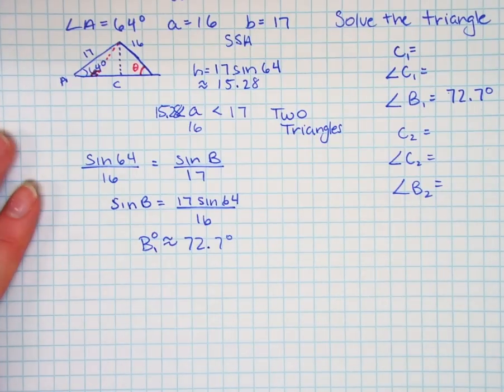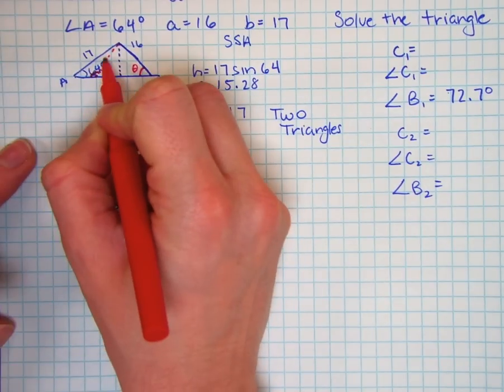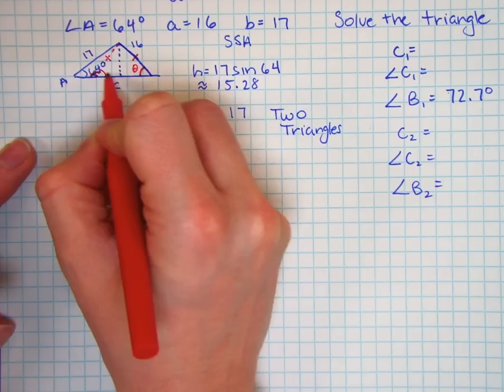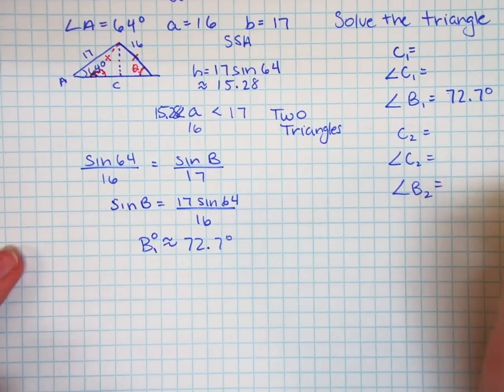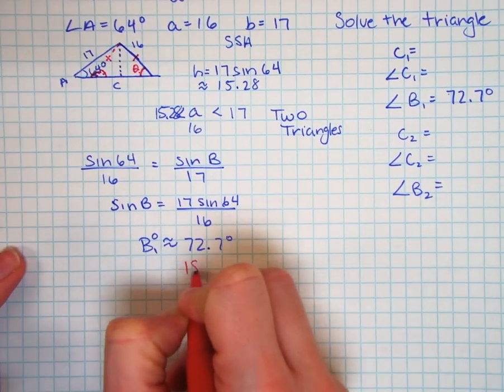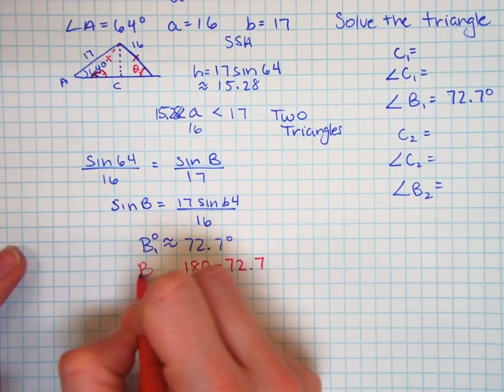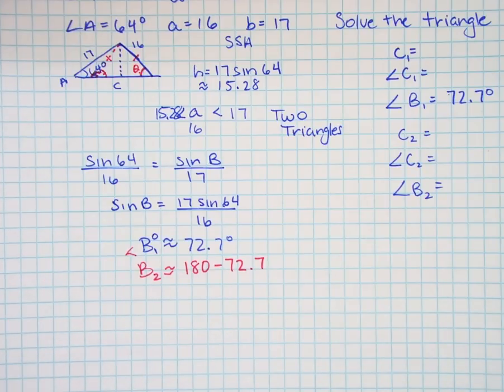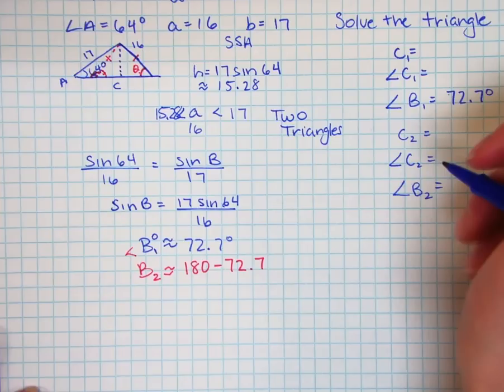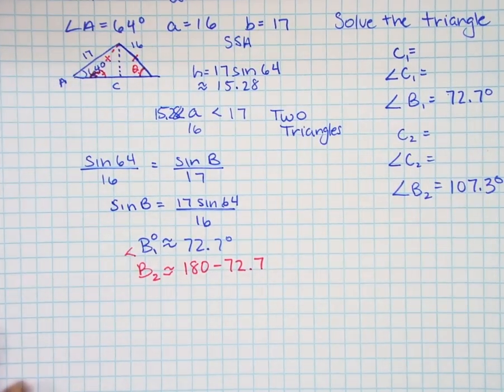To find the other angle, since these two angles in this isosceles triangle, these sides are both 16, these two are both 72.7. That means to find B2, I'll take 180 minus 72.7 to find angle B2. And so I'll do that 180 minus 72.7 to give me 107.3 degrees for B2.